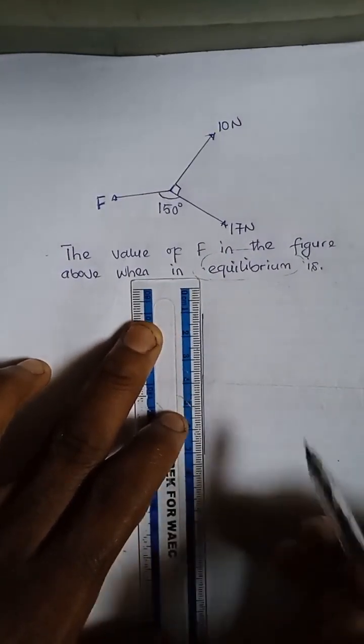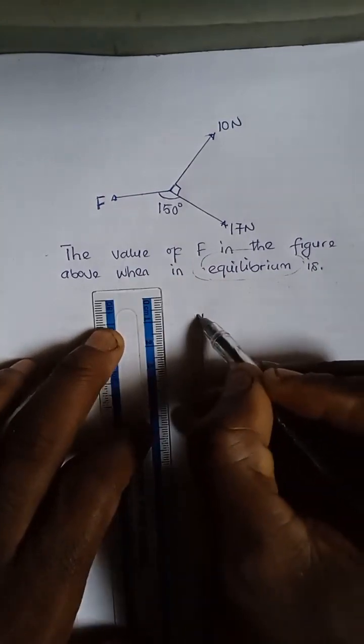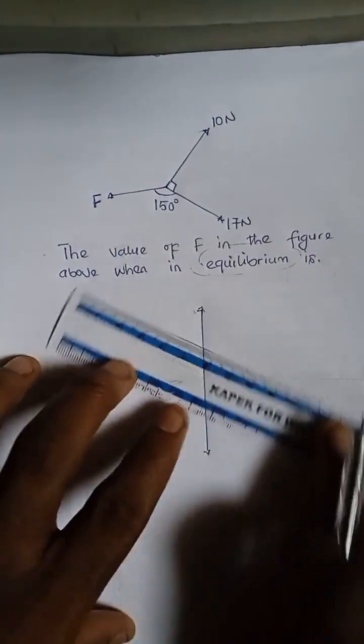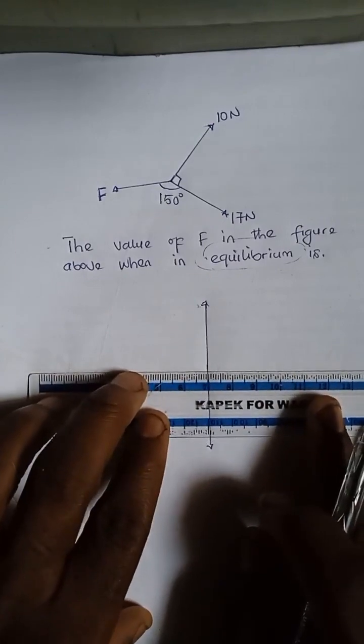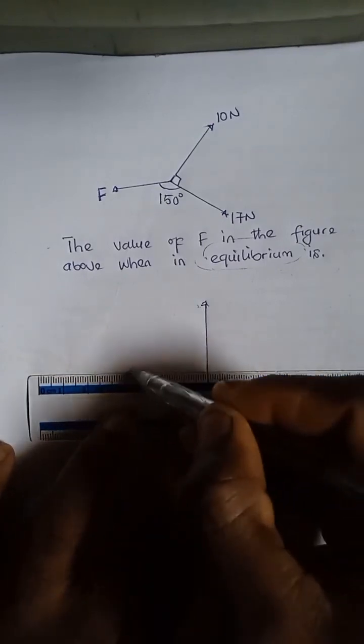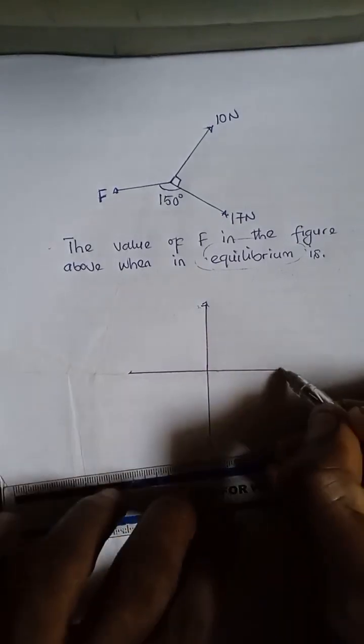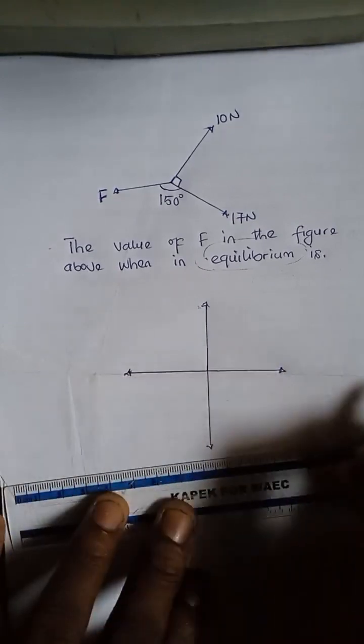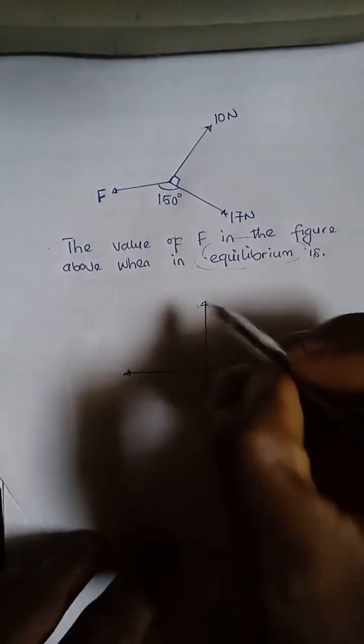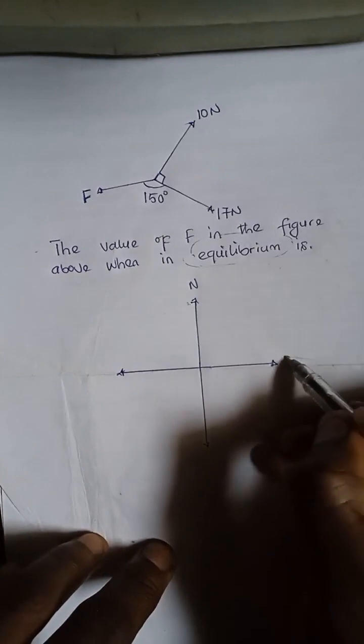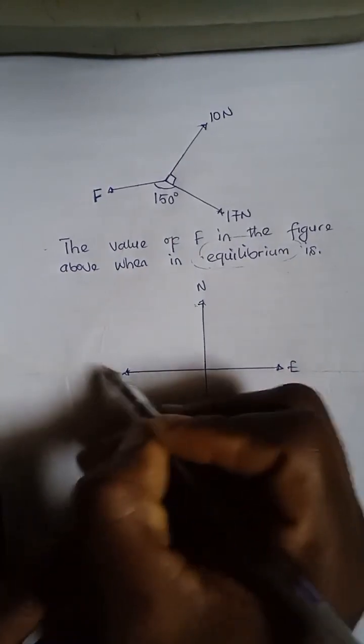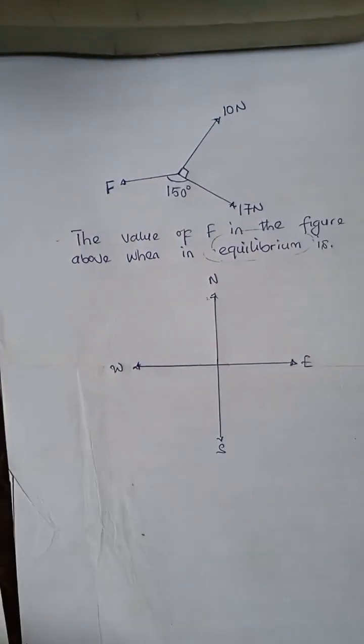Let me just draw my north-south line. Just like in bearing, we first draw our north-south line. This is north, this is south. Then we draw our east-west line. So we have something like this. This is east and this is west. So I would say this is north, this is east, this is south, and this is west.